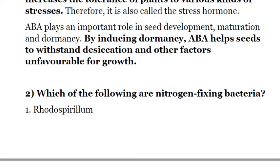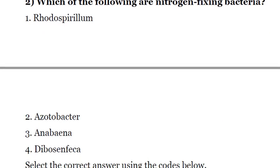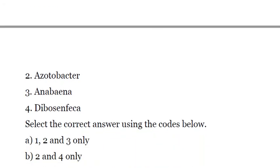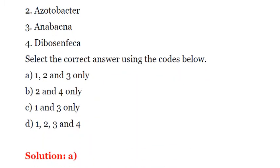Second question: which of the following are nitrogen-fixing bacteria? One, Rhodospirillum; two, Azotobacter; three, Anabaena; four, Deboce and Fica. The nitrogen-fixing bacteria from these options are 1, 2, and 3 — Rhodospirillum, Azotobacter, and Anabaena — as they are all free-living nitrogen-fixing bacteria. So the answer is A.